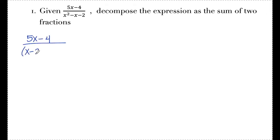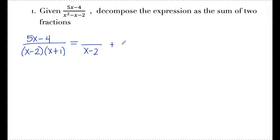When I factor this denominator, I get x minus 2 times x plus 1. This is an example of two distinct linear factors — both are linear because their degree is x to the first, and they're distinct because they're two different factors. To split this up into a sum of fractions, I need something over x minus 2 plus something over x plus 1.